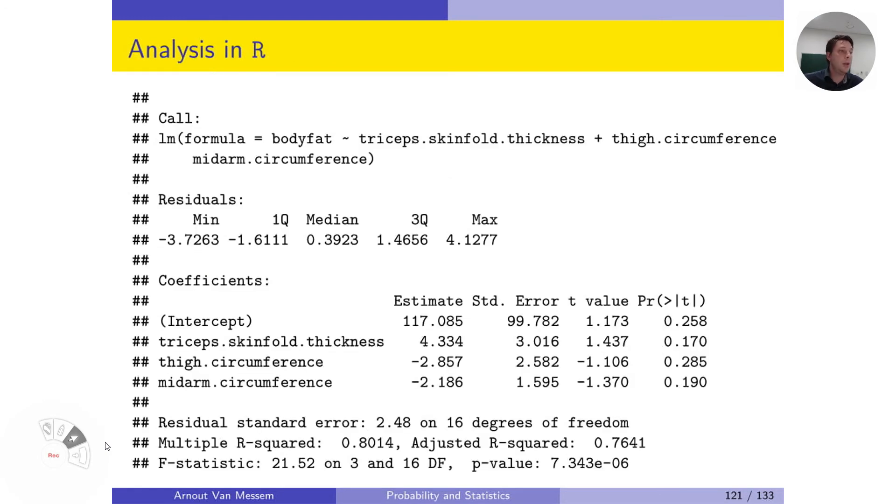The model here gives us the following predictors. So we have a coefficient of 4.3 for the first one, for the triceps skinfold. We have a coefficient of minus 2.8 for the thigh circumference and minus 2.1 for the mid-arm circumference.